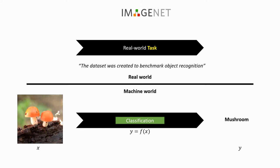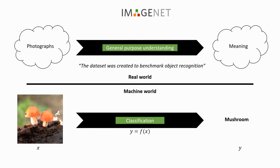But what is the real-world task this competition represents? To quote the ImageNet website, the dataset was created to benchmark object recognition — not really concerned with specific classes, but more with the larger question of how to derive meaning from photographs for a general-purpose understanding of images. The challenge is not built to solve a specific task, but to compare different algorithms and track our progress in object recognition in general.